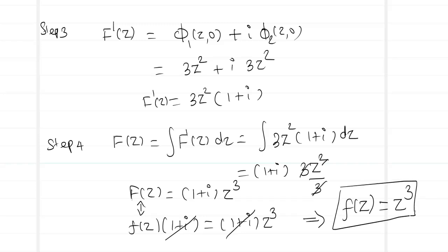Whether you have been given u + v or u - v, you can follow this methodology and apply the Milne Thomson method in just four steps to get your analytic function f(z). Thank you.